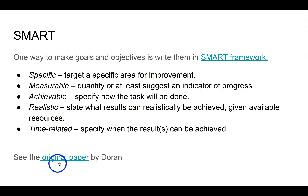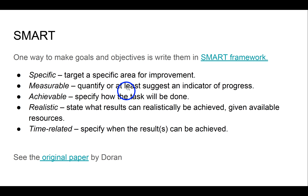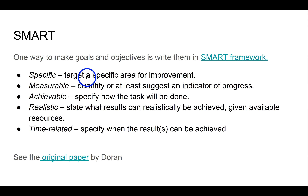One way to make goals more achievable is to put them in a framework. People use the SMART framework. SMART is an acronym — the original paper, which I've linked in the PDF slides, is by a guy called Duran. It was a way of improving the management of a team or company, but it's also used a lot for career development.